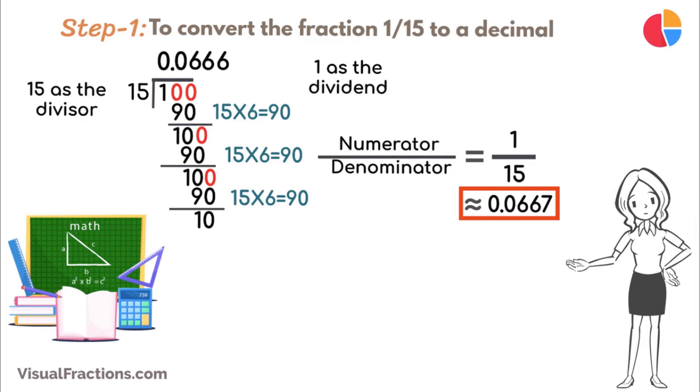Now, to convert 0.0667 to a percent, we simply multiply it by 100, resulting in approximately 6.67%.